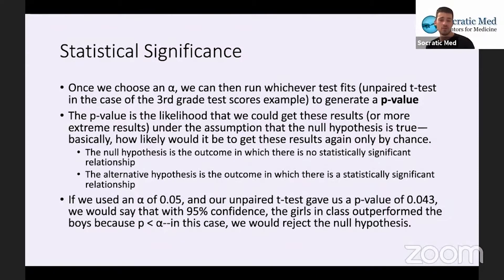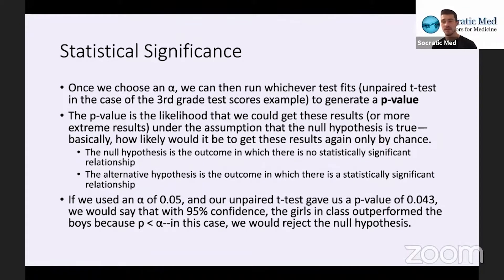There are two different types of hypotheses in hypothesis testing. Either the null hypothesis is true or the alternative is true. In this case, the null hypothesis would be that there is no statistical significance — there's no difference between the two tests, and any difference was due completely to chance. The alternative hypothesis is that the difference in these averages is not caused by chance and the girls are actually performing better than the boys.